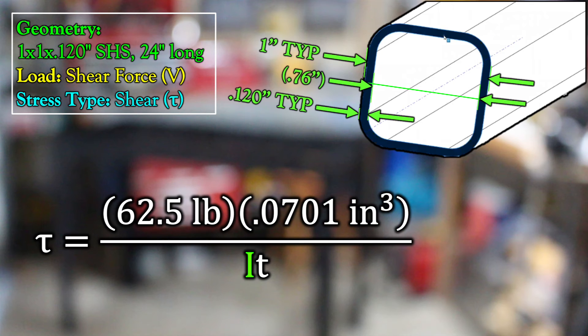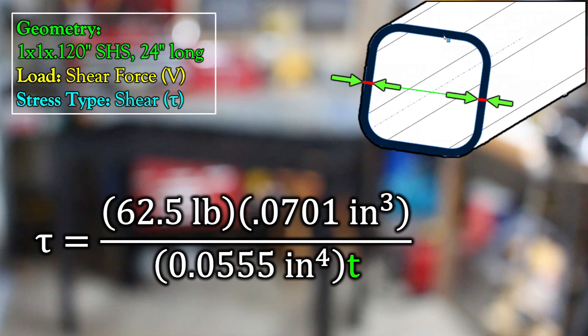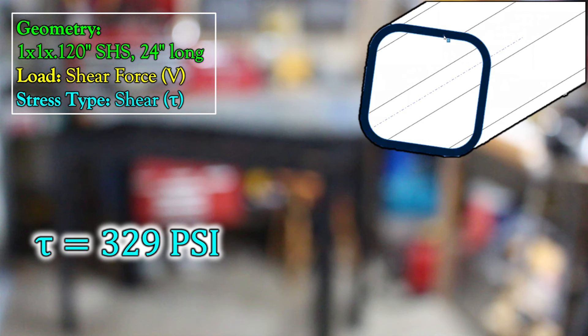We've already found I, 0.0555 quartic inches, and T is the total thickness where we're analyzing. And for us, that's 0.240 inches. And there's our shear stress, broken down into load and geometry. Crunching the numbers, we get 329 PSI.